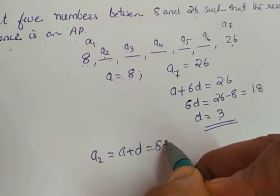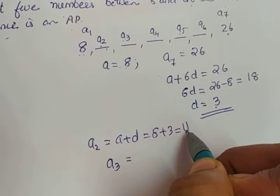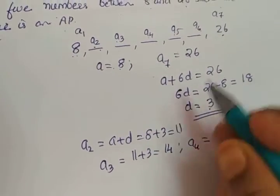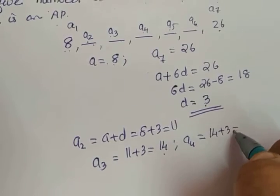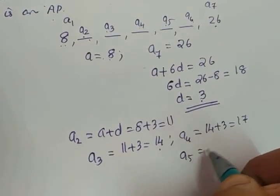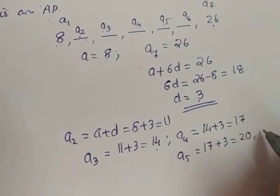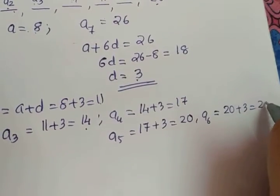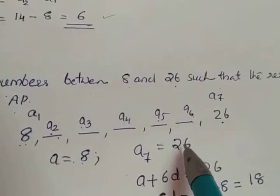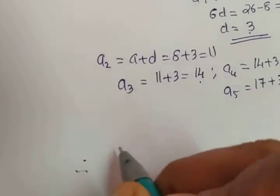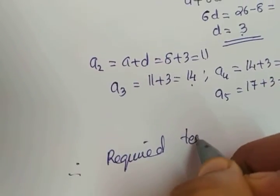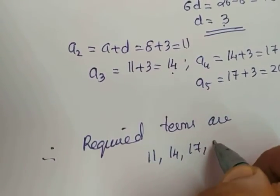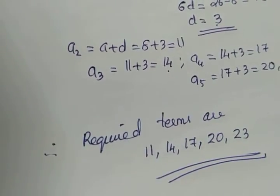So a2 = a + d = 8 + 3 = 11. Then a3 = 11 + 3 = 14, a4 = 14 + 3 = 17, a5 = 17 + 3 = 20, a6 = 20 + 3 = 23, and a7 = 23 + 3 = 26, which matches. Therefore the five inserted terms are 11, 14, 17, 20, and 23.